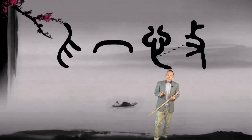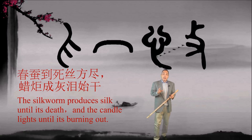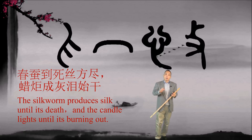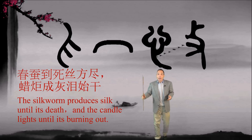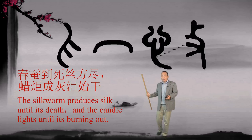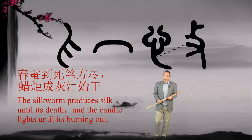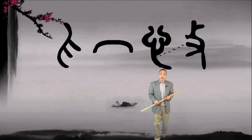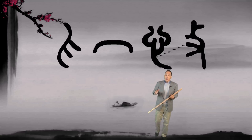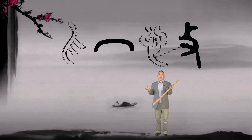But one Chinese poem says: the silkworm produces silk until its death, and the candle lights until it's burning out. Love is a sacrifice. To put these four parts together forms the Chinese character 爱, or love.